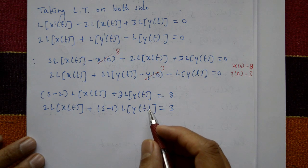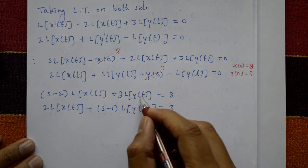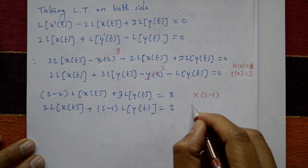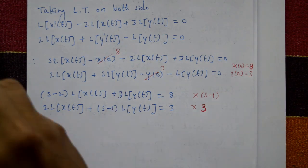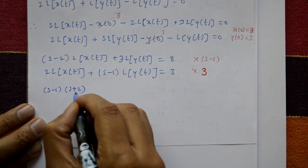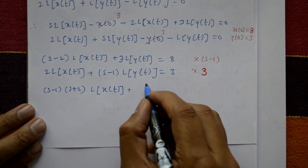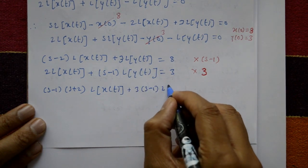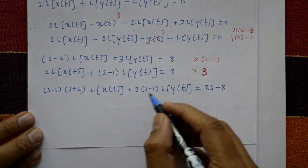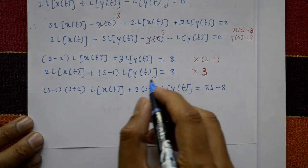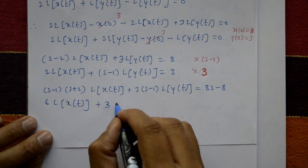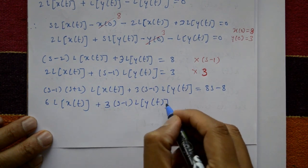To eliminate Laplace[y(t)], multiply the first equation by (s − 1): (s − 2)(s − 1)·Laplace[x(t)] + 3(s − 1)·Laplace[y(t)] = 8(s − 1). Multiply the second equation by 3: 6·Laplace[x(t)] + 3(s − 1)·Laplace[y(t)] = 9.